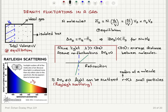In Rayleigh scattering, we have light incident on a molecule. Light is an electromagnetic wave, so it's going to cause the electrons in the molecule to oscillate at their natural frequencies. If the incoming light frequency matches that of the natural frequency of oscillation of the electrons, there will be large amplitude oscillations giving out light with the frequency that is basically the natural frequency of the oscillation. This is like a driven oscillator in mechanics. We see that the spectrum of the scattered light — the intensity as a function of wavelength — shows a typical behavior.